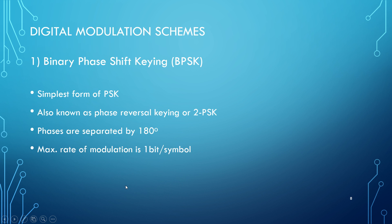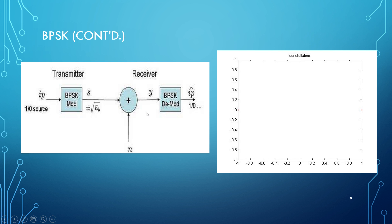Now let us talk about the digital modulation schemes. Firstly, Binary Phase Shift Keying (BPSK): it is one of the simplest forms of phase shift keying, also known as phase reverse keying or 2PSK. The phases are separated by 180 degrees with a maximum modulation rate of one bit per symbol. The block diagram of the BPSK transmitter is shown. The input signal is given to the BPSK modulator, noise gets added to that signal, which is then demodulated in the BPSK demodulator stage. The constellation diagram for BPSK shows two points at a phase difference of 180 degrees.